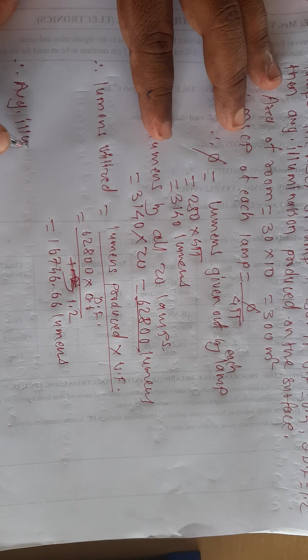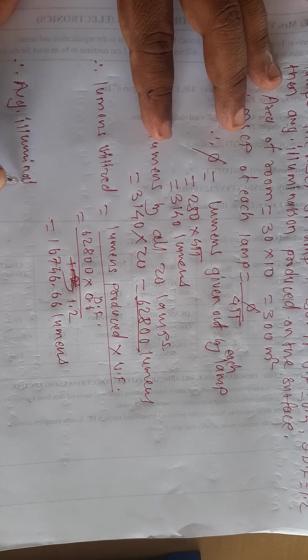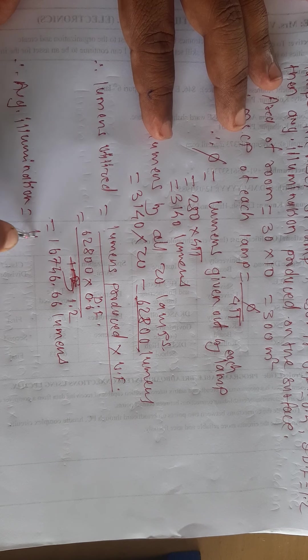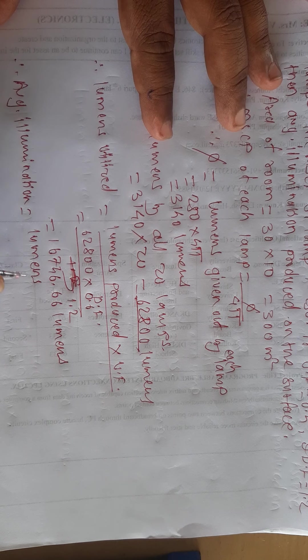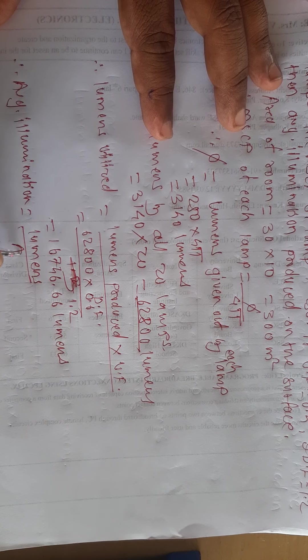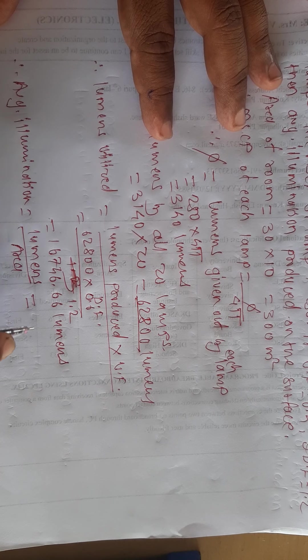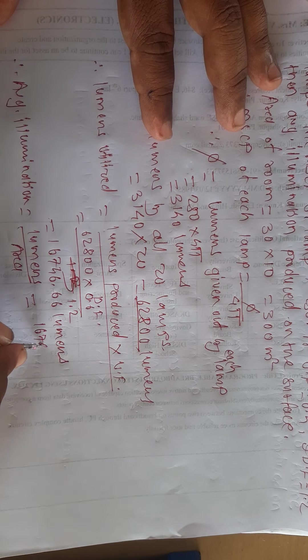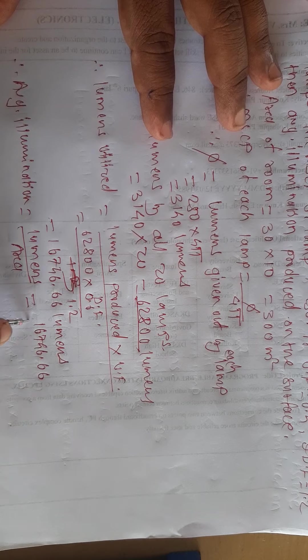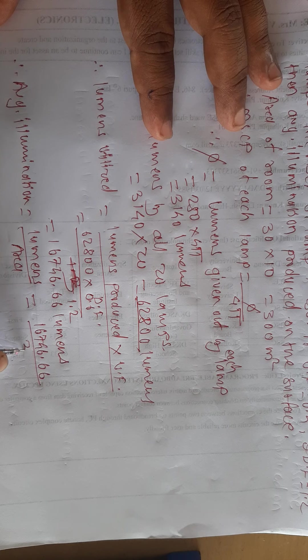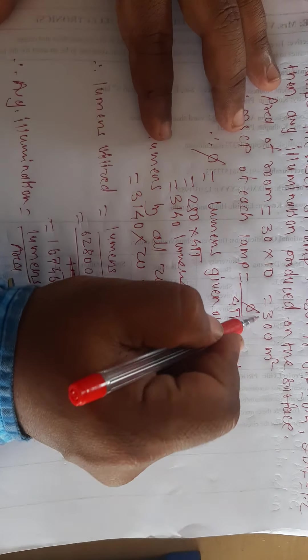Average illumination is equal to lumens divided by area: 16746.66 divided by 300 meter square.